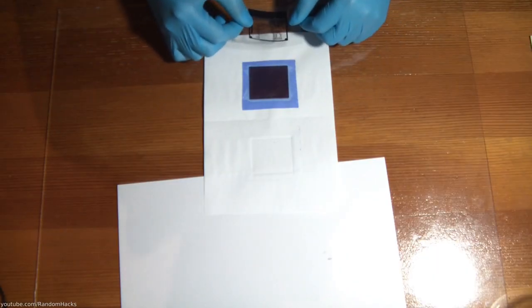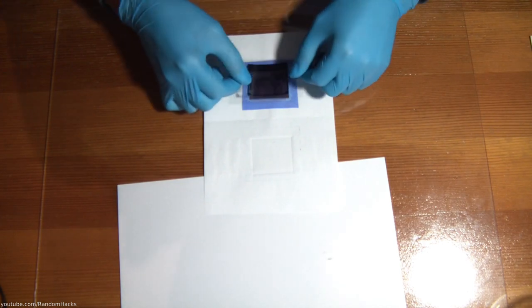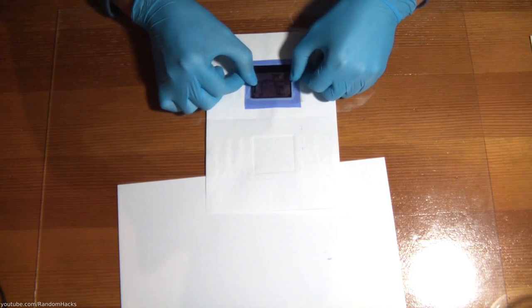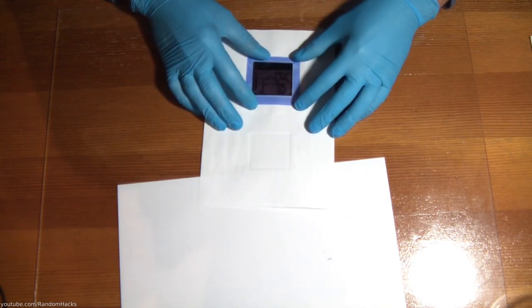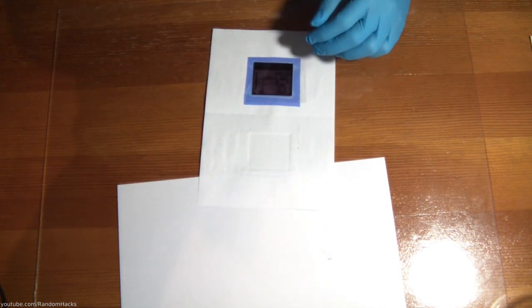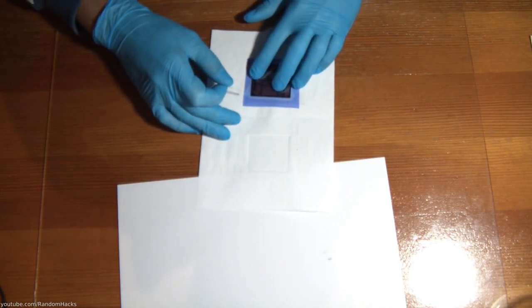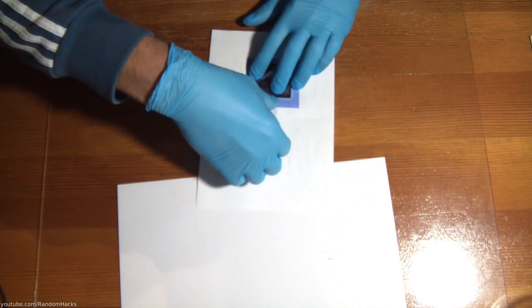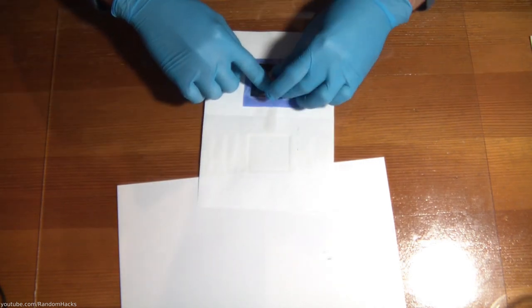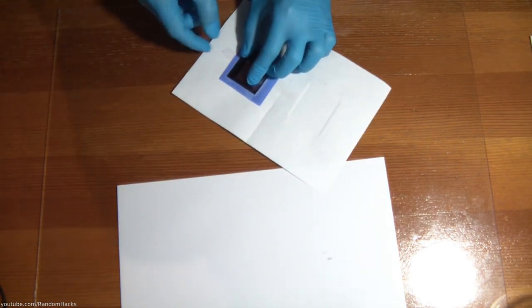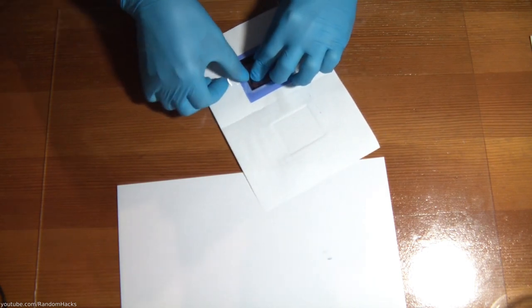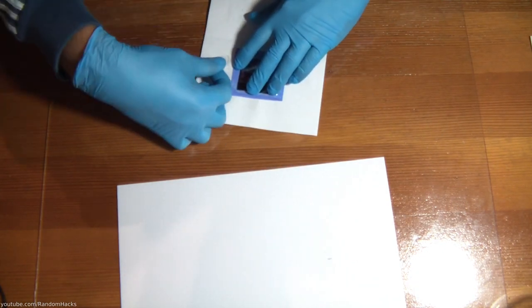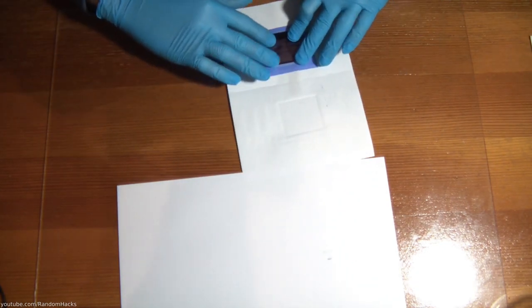Then I placed the transparency that I printed earlier over the board and secured it with tape. This print needs to be a negative of your design, meaning that the clear parts are where the copper will stay and the black are the ones that will get etched away. Some people print the design two times and overlap the sheets to get maximum opacity. In my case I only use one with good results. You should inspect your print, if there are any lines that the printer did not cover, you can fix those with a black permanent marker. I found that having the printed side directly facing the board gives better results, so you might need to mirror the design before printing it.